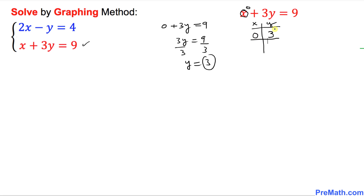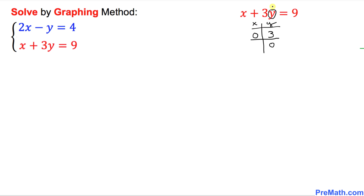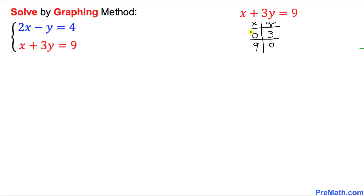Next I am going to pick y equal to 0 and see what x value we get. Wherever you see y, replace it with 0. So x plus 3 times 0 equals 9, which gives x plus 0 equals 9, so x turns out to be 9.